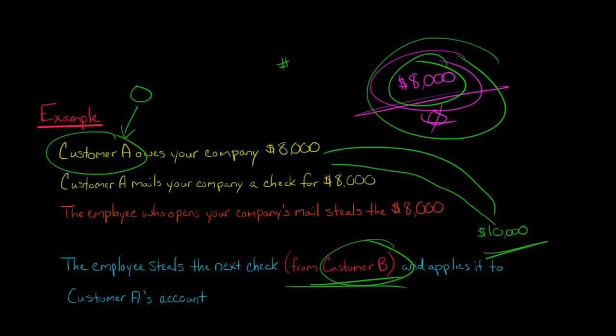Because from your company's accounting system perspective, they have paid their bill. But now the issue is customer B. At some point, customer B is going to get a notice saying, hey, where's your money? Because this money was stolen.